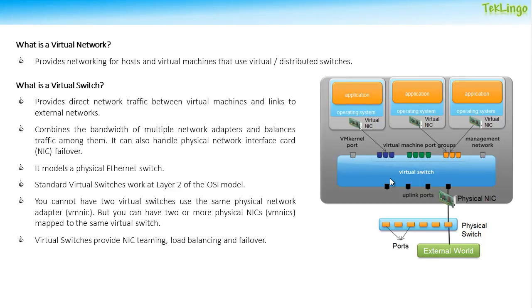A virtual switch is a software-defined switch that provides networking connectivity for virtual machines running on an ESXi host. A virtual switch provides different types of traffic such as management network, virtual machine port groups, and VM kernel port groups. A virtual switch can do almost everything a physical switch can do, which is why it works at layer 2 of the OSI model.